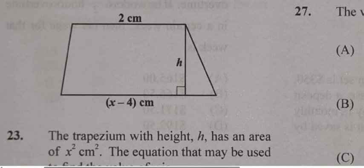So we have a trapezium with height h. We have a side, let's call that side length here, 2 centimeters, which is parallel to this one down here, which is x minus 4.